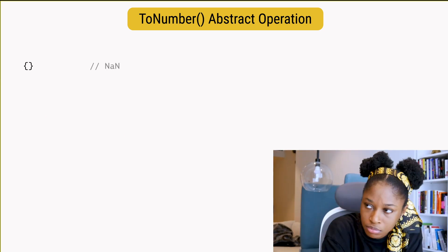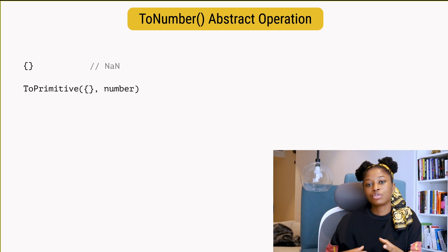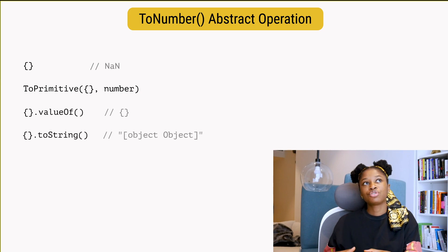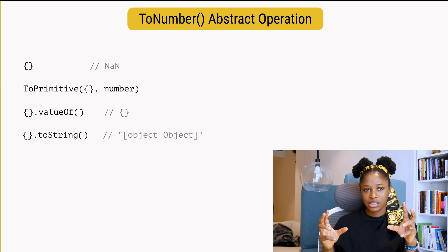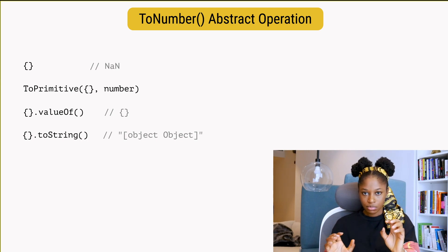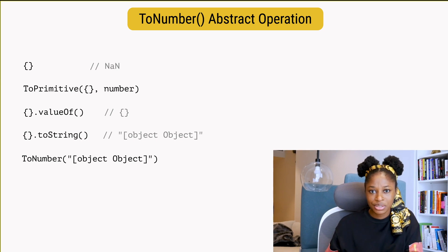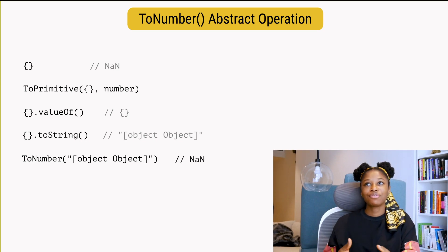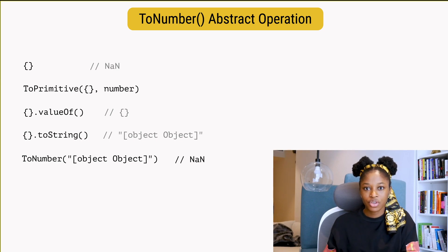What if we have an object? The ToPrimitive abstract operation will be invoked to convert it to its primitive value first. Stringifying an object returns the value of the object's internal class — the string "[object Object]". ToNumber receives that as an argument, and since that is obviously not a valid representation of a numeric string literal, we will get NaN. I have a video explaining how non-primitive values are converted to strings, so if you haven't seen it, check it out — I'll leave a link in the description below.